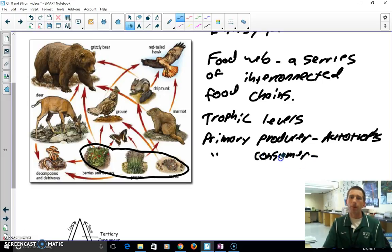So primary consumer. So all of our consumers now are heterotrophs. So they have to eat other things. They can't make their own food and eat their own food, but they have to ingest other organisms to get their energy. So this butterfly that eats the grass would be a primary consumer. The deer that eats the berries and flowers would be a primary consumer.